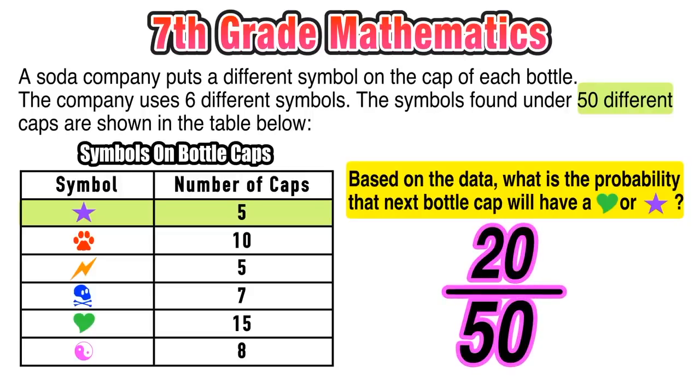So again, based on that data table, out of the 50 different bottles with different symbols on them, 20 of them had either a green heart or a purple star.